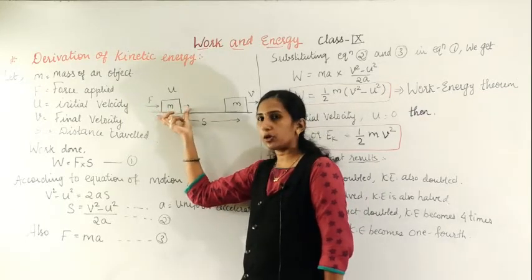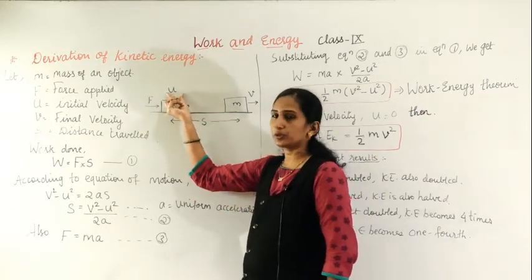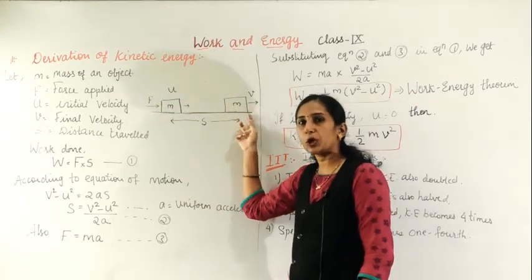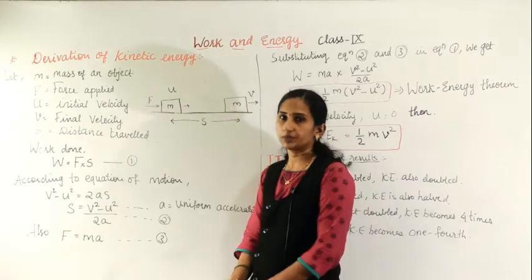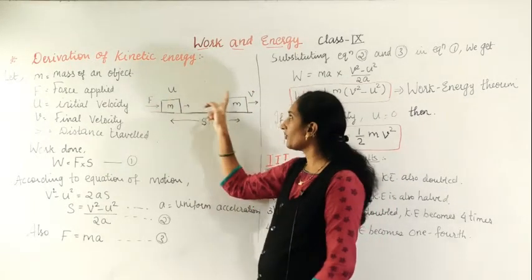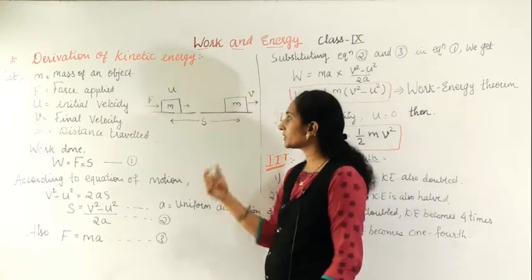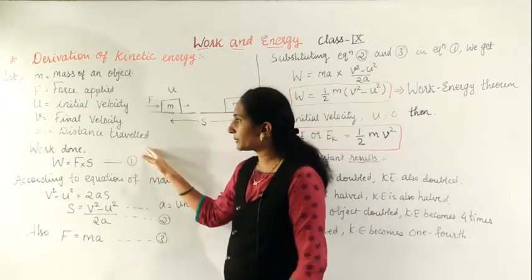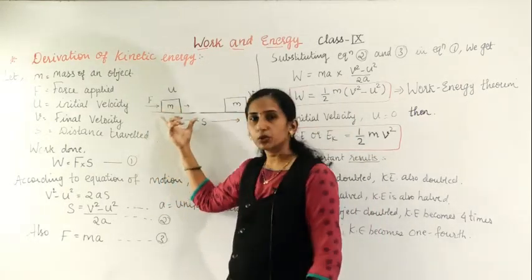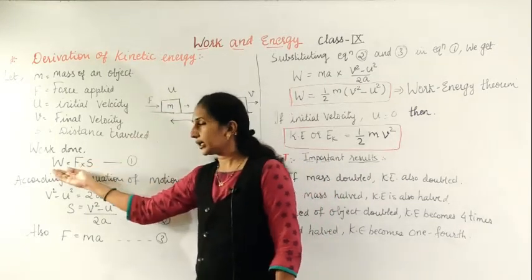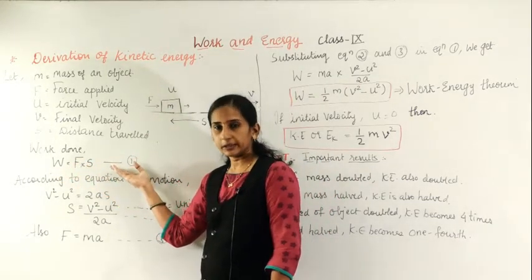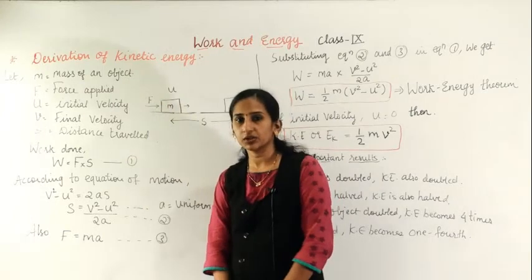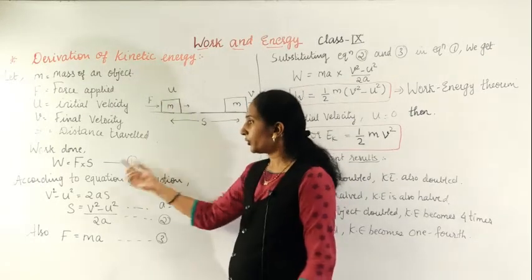Here u is the initial velocity, v is the final velocity, and s is the distance traveled by the block. When the force is applied, the block moves from its initial position to another position where it stops — that final velocity is v. Mass is the same throughout, and s is the distance traveled. Work done W equals force into displacement s.